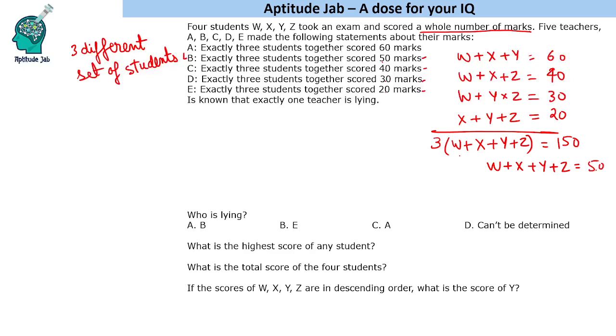You might say B is lying in this case, but wait. These people are reporting the total of three of these students. Suppose B is lying, but A was reporting the total of three students.